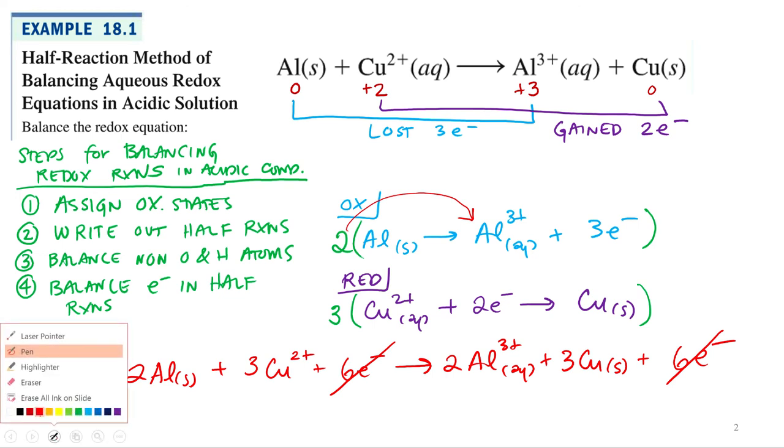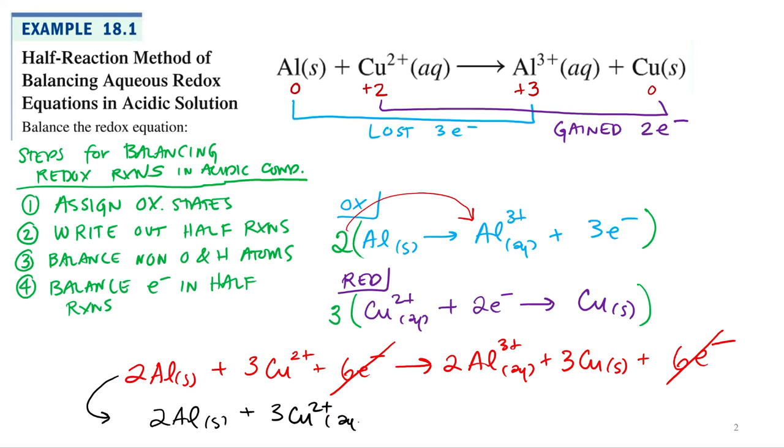And so normally all we would have to do is write out two aluminums plus three coppers goes to two aluminum three plus plus three copper solids. And that's usually what I'll just write at the end. I won't include the electrons going forward because they're always going to cancel out. Alright, so now it's balanced. Even though the beginning looked balanced, it wasn't balanced due to the electrons transferred.